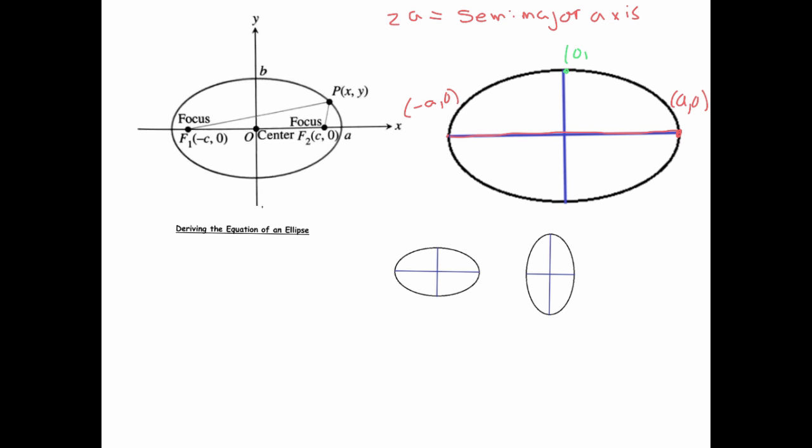The co-vertices would be labeled (0, b) and (0, -b). This green segment is the minor axis, but its length 2b is called the semi-minor axis. Again, counterintuitive because they're not lines, they're numbers.